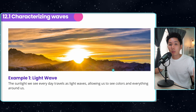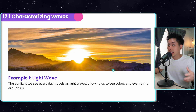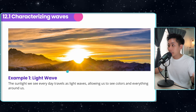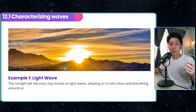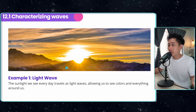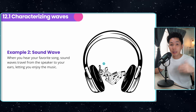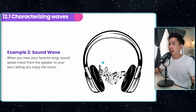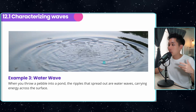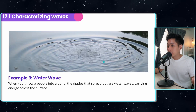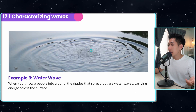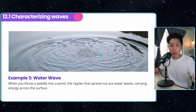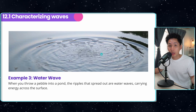Some examples of waves would be a light wave — something we see every day — which travels from the sun to the earth. There's also a sound wave, and a water wave. When you throw a pebble into a pond, the ripples that spread out are the water waves.